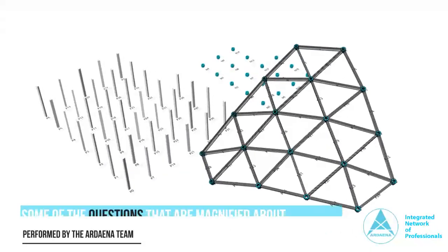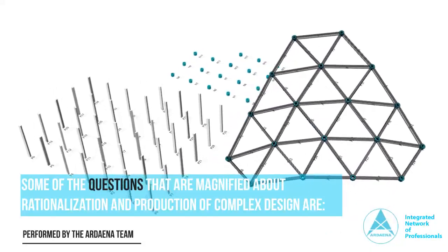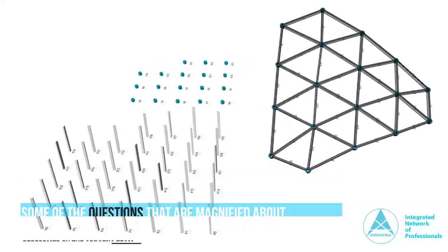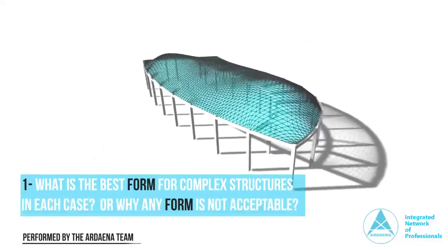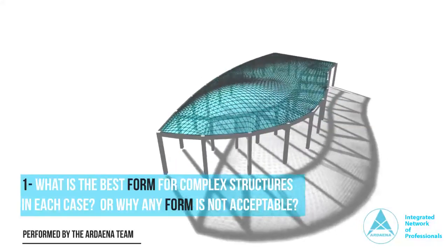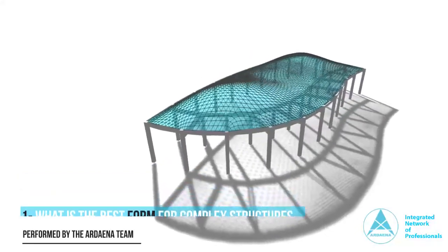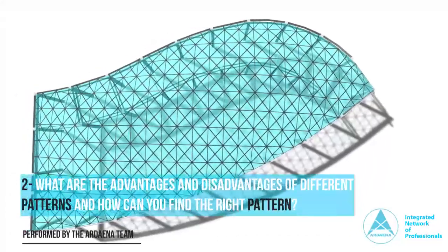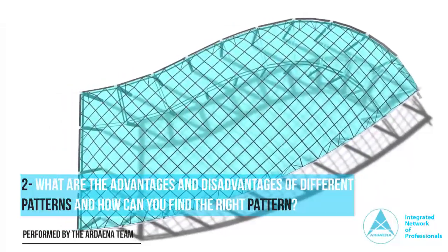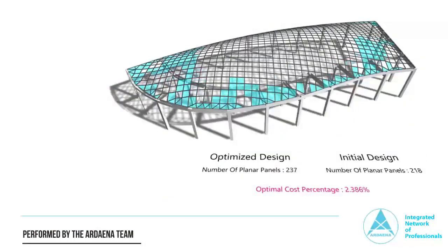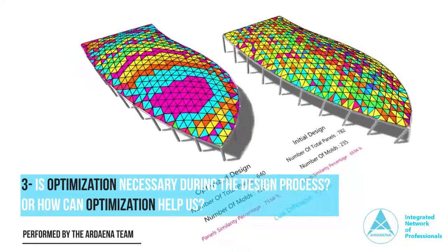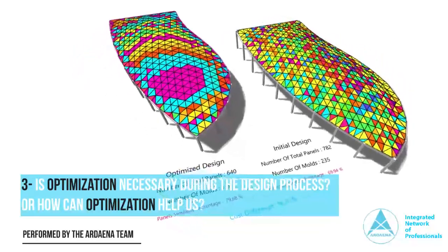Some of the questions that are raised about rationalization and production of complex design are: 1. What is the best form for complex structures in each case, or why any form is not acceptable? 2. What are the advantages and disadvantages of different patterns and how can you find the right pattern? 3. Is optimization necessary during the design process, or how can optimization help us?